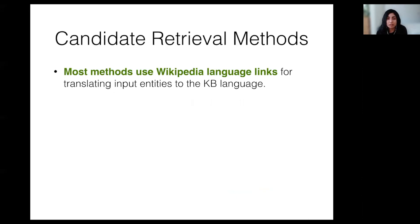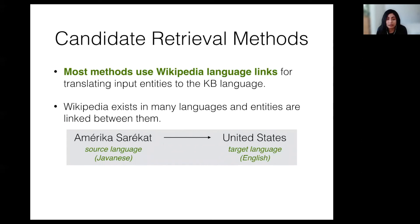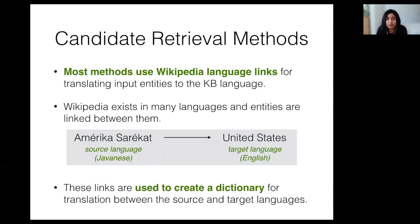Most existing methods for cross-lingual candidate retrieval attempt to translate the input entity mention from the source language to the knowledge base language, which is typically English. After the mention is translated, simple string matching methods can be used to find appropriate candidates. The translation process often relies on Wikipedia language links. These language links essentially connect pages about the same entity between the Wikipedias of different languages. For example, articles about the United States, which is a specific entity, are linked across all languages that have a Wikipedia.